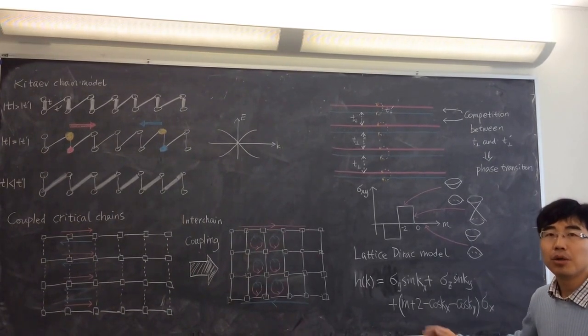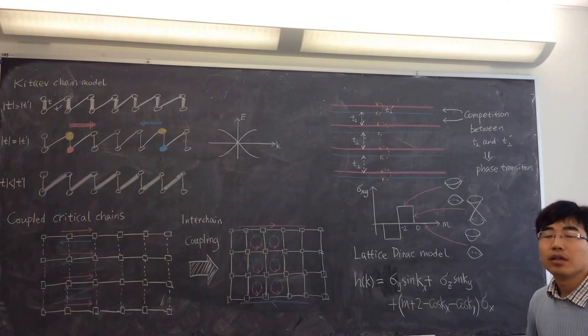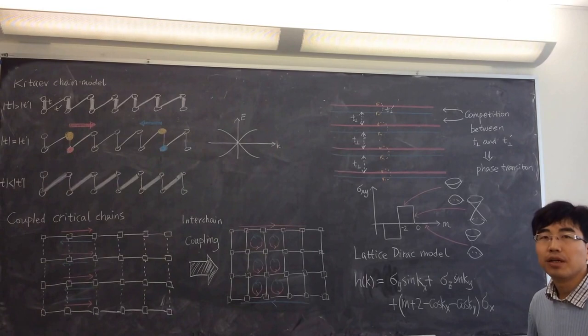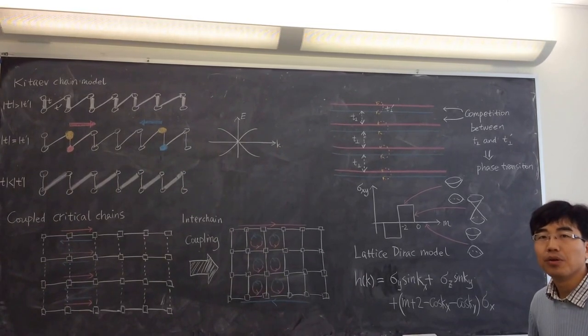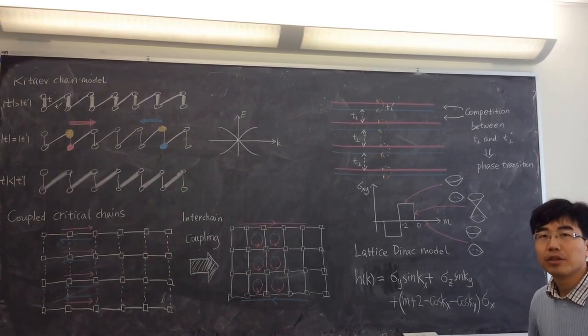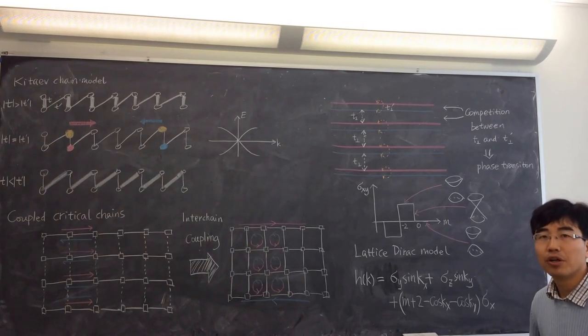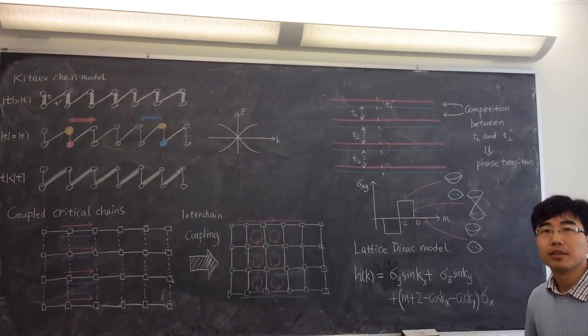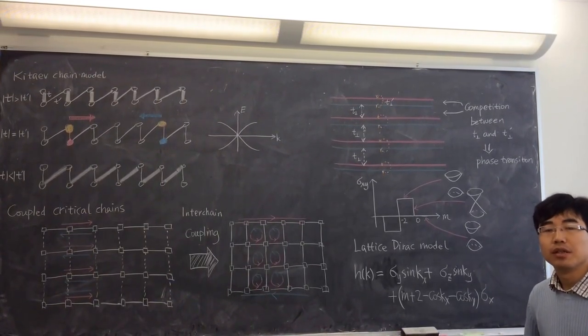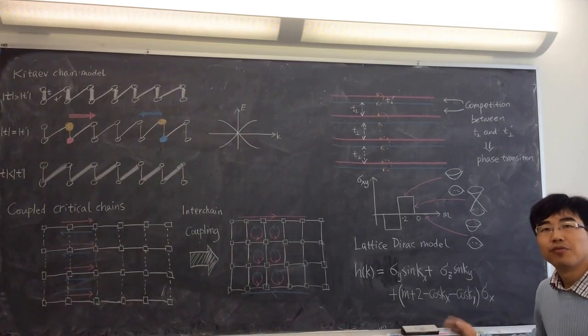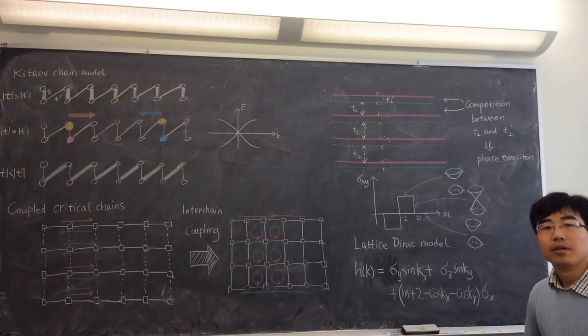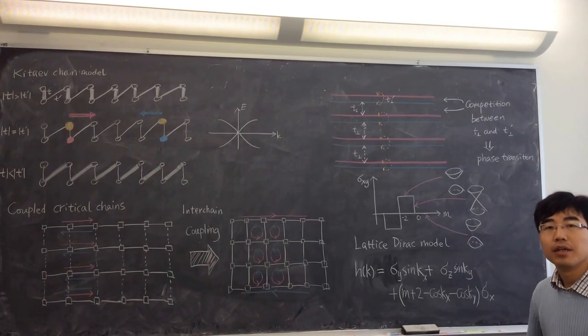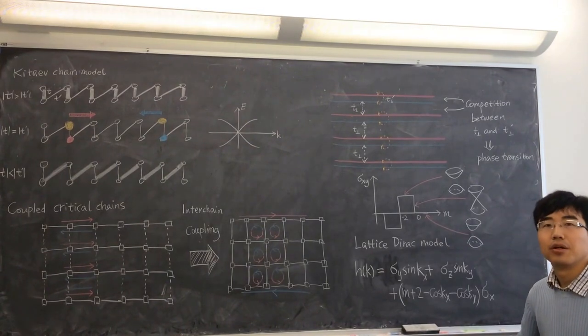So I'm emphasizing this model because Dirac models can be used as prototype models for all the free fermion topological states. It plays a particularly important role. Although we are not saying that all the topological states have to be described by Dirac model, you have many other models, many other realistic systems described by the system. But Dirac model is particularly nice because it's the same form of model where you obtain by a lattice version of the famous Dirac equation. In any dimensions, then you can get a theory description of all the different topological states.